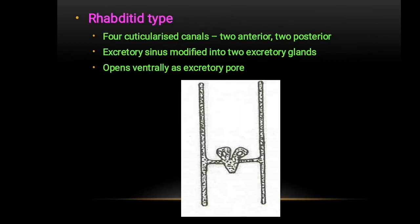Next is the rhabditoid type. In this type, there are four cuticularized canals — two anterior and two posterior. The excretory sinus is modified into two excretory glands, and an excretory gland cell is present, filled with secretory granules. It opens ventrally as an excretory pore. Example: Rhabditis.